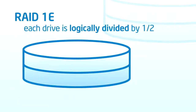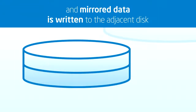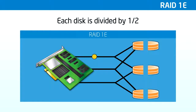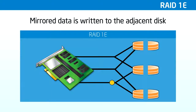RAID 1E is also a combination of mirroring with data striping. This RAID level stripes data and copies of the data across all the drives in the array. The first set of stripes are the data, and the second set of stripes are mirrors of the first data stripe contained within the next logical drive. As with the standard RAID 1, the data is mirrored, so the capacity of the logical drive is 50% of the total physical drive capacity of the array. RAID 1E requires a minimum of three drives. Each disk gets logically divided in half, and mirrored data is written to the adjacent disk.